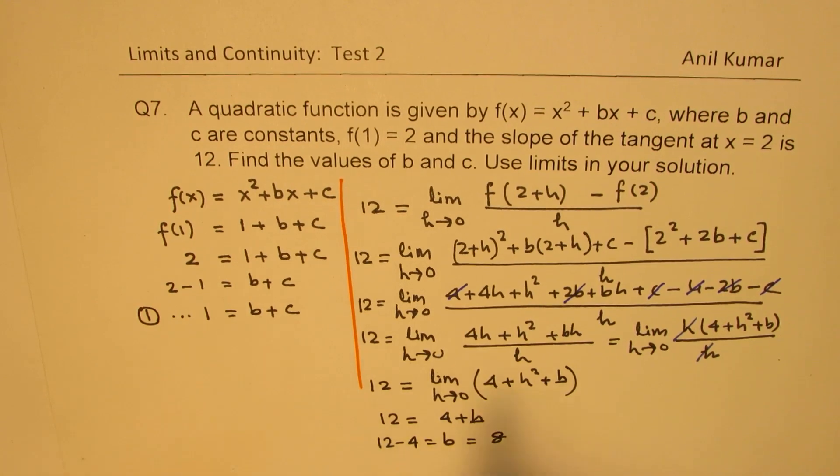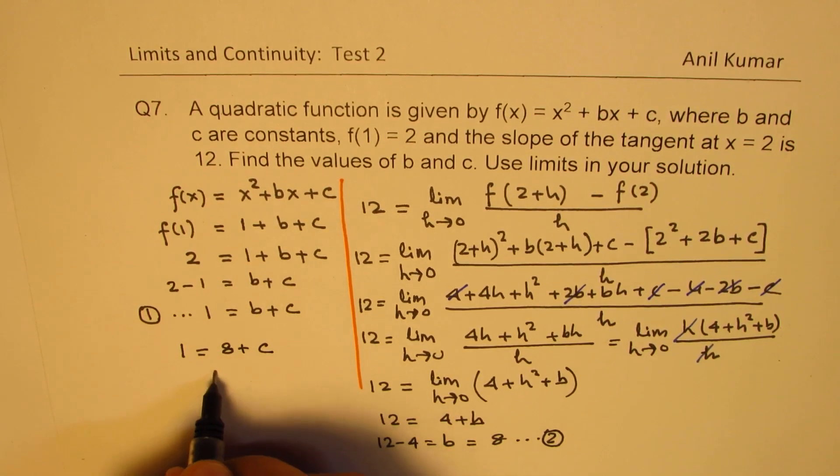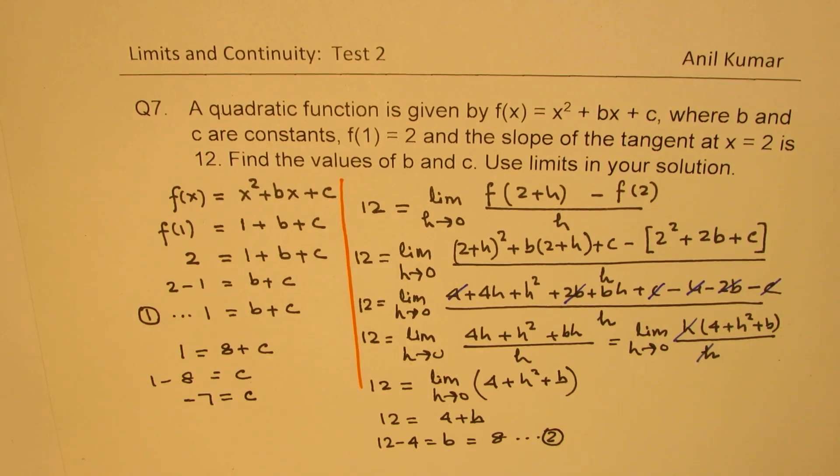Substituting 8 here, so this becomes our second equation. Substituting 8 in equation 1, we get 1 = 8 + c. Or 1 - 8 = c. So -7 becomes the value for c.